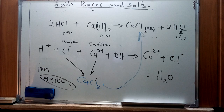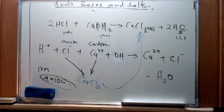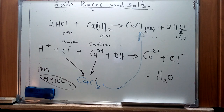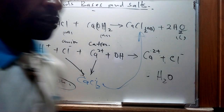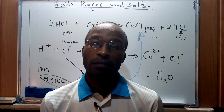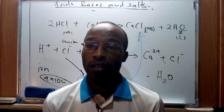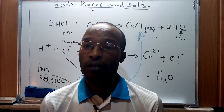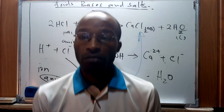In summary, we can define an acid, a base, and a salt using the general definition, the Arrhenius definition, and the Brønsted definition. For the Brønsted definition, an acid is a proton donor and a base is a proton acceptor. These terms will be applied across topics we discuss on reactions of acids, bases, and salts. Thank you, and goodbye — God bless.